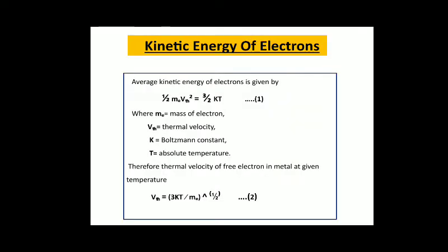The kinetic energy of electrons: the average kinetic energy of an electron is defined as (1/2) m_e v_th² = (3/2) kT, where m_e is the mass of the electron, v_th is the thermal velocity of the electron, k is the Boltzmann constant, and T is absolute temperature. The thermal velocity of a free electron at a given temperature is v_th = √(3kT / m_e).